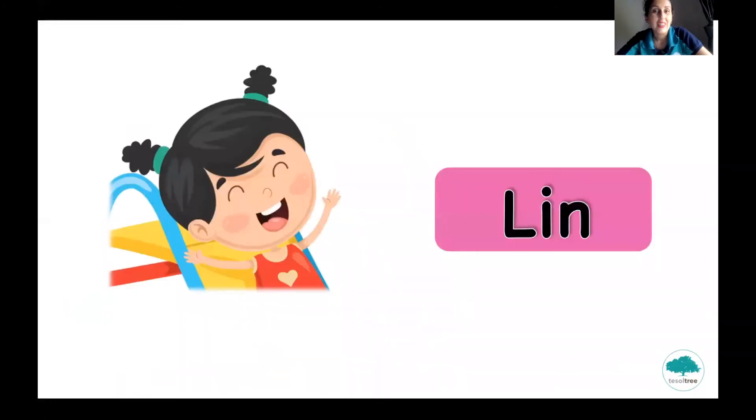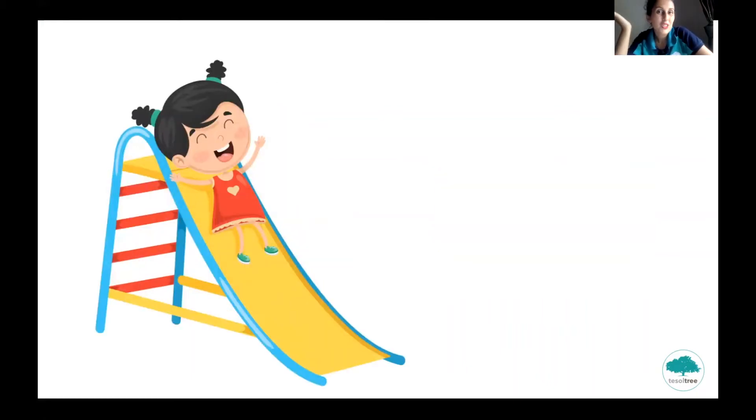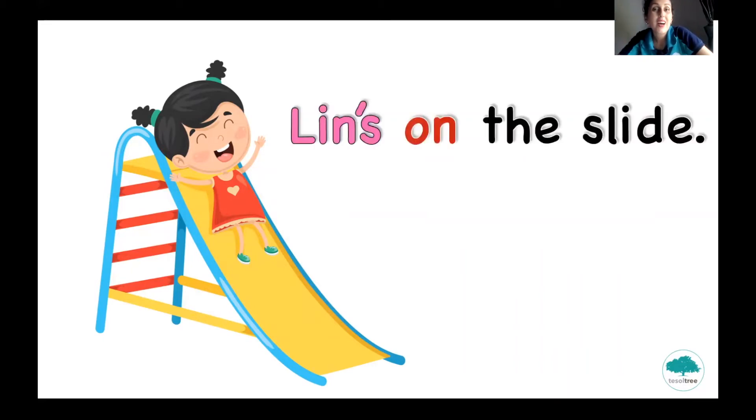She is sitting in the swing on the playground. Okay, this is Lynn. Hello, Lynn. And where is Lynn? What is she doing? Lynn's on the slide. She is so happy. She is sliding. Read this sentence and repeat. Lynn's on the slide. Okay, fine. Okay, let's continue.